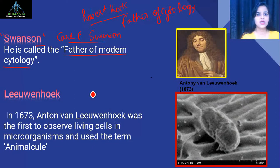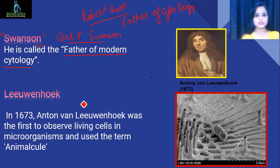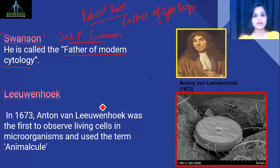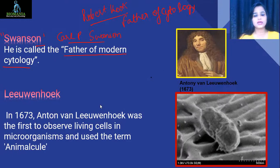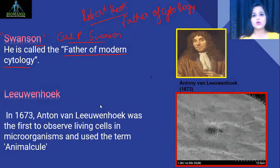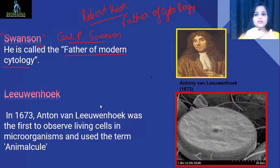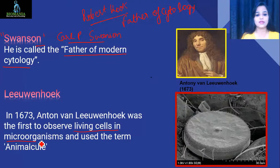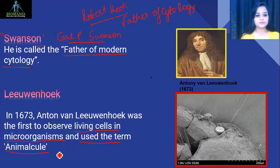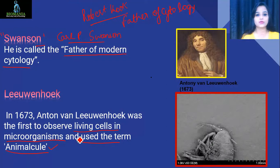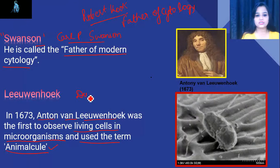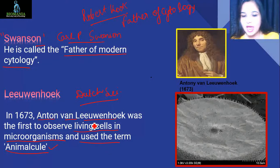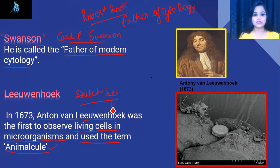Now let's look at another very great scientist: Anton van Leeuwenhoek. His work is very important. In his childhood he was naughty, his father died when he was around 10 years old, and his mother sent him to his uncle who had a shop of spectacles. He would collect cutting pieces of glass and arrange them, which led him to develop his microscopy skills. He was the first to observe living cells in microorganisms and used the term animalcules.